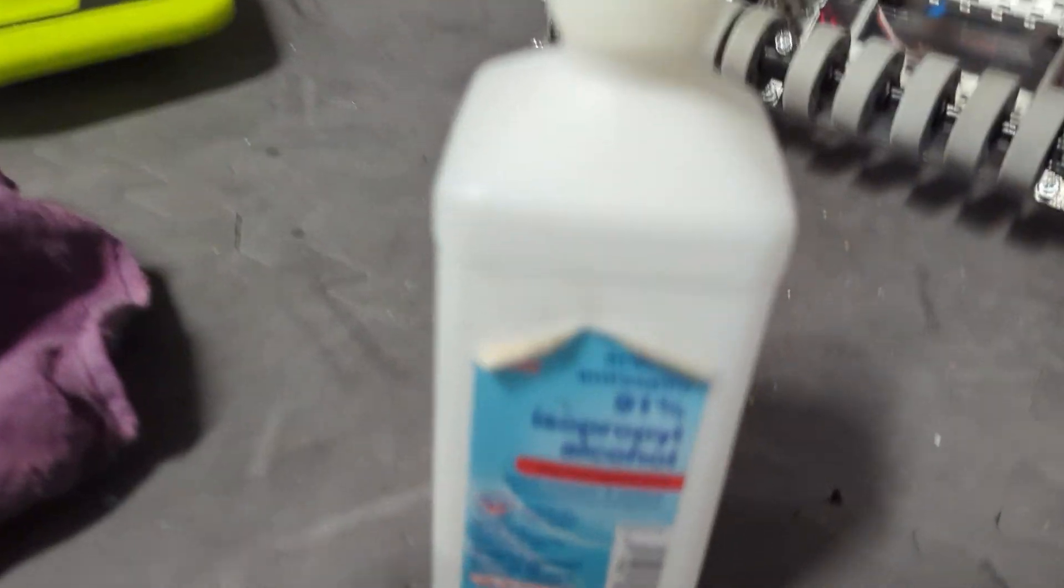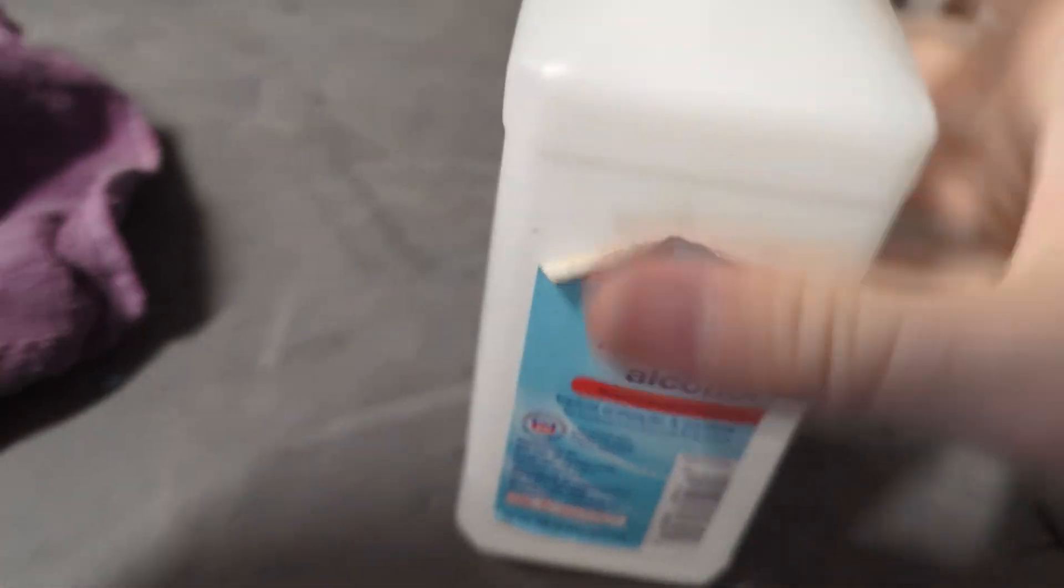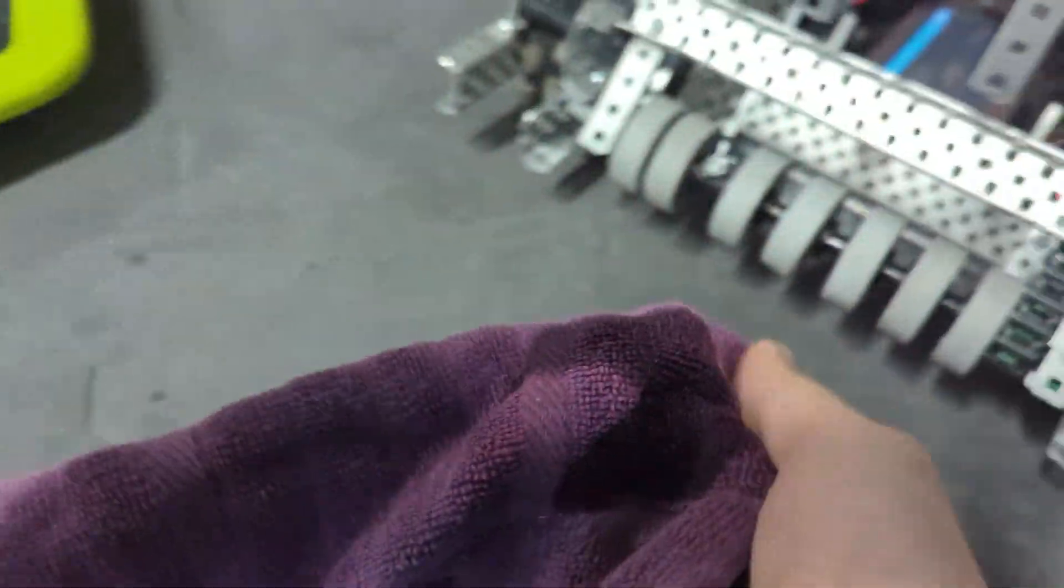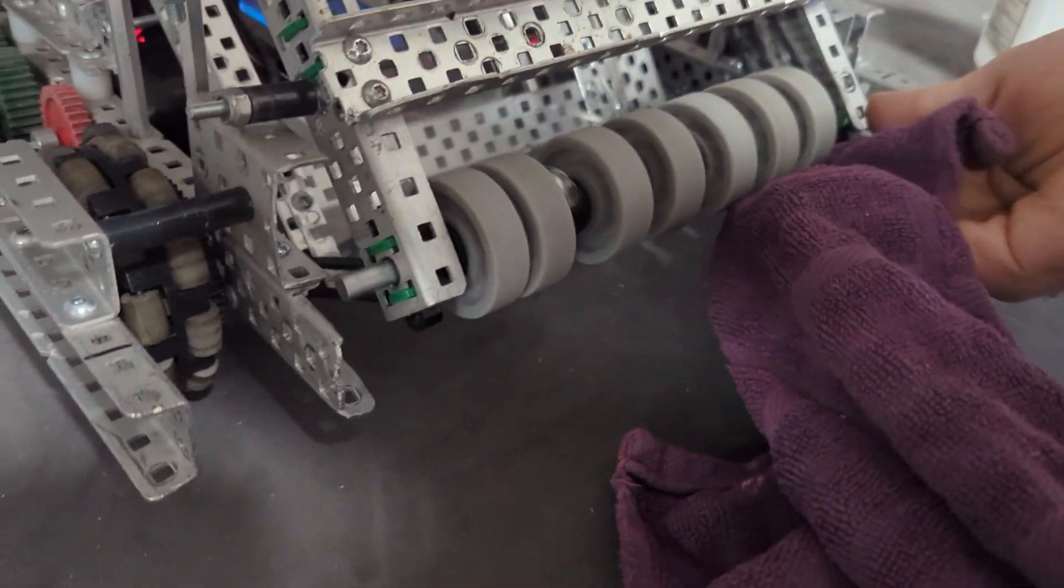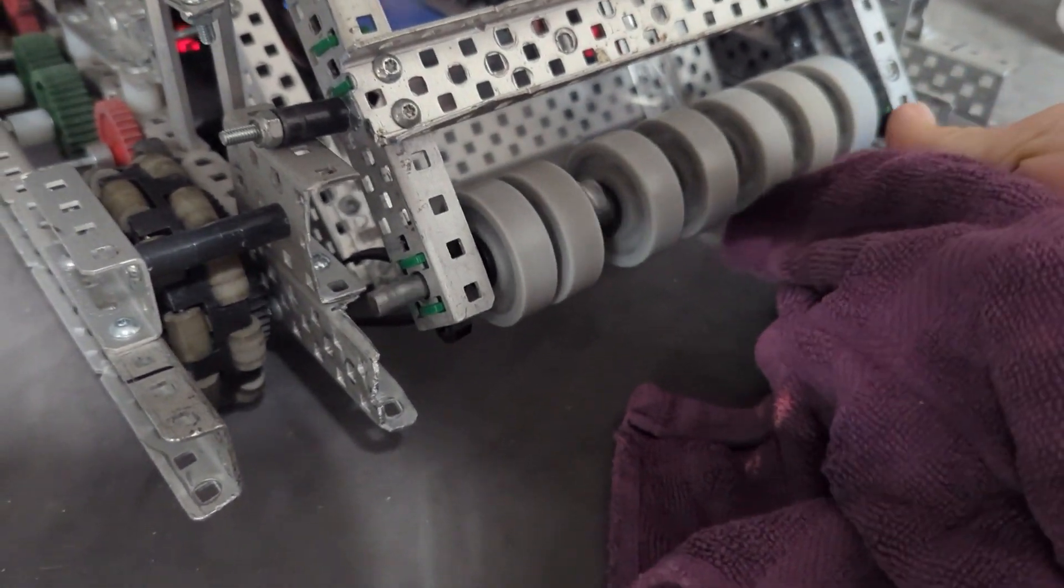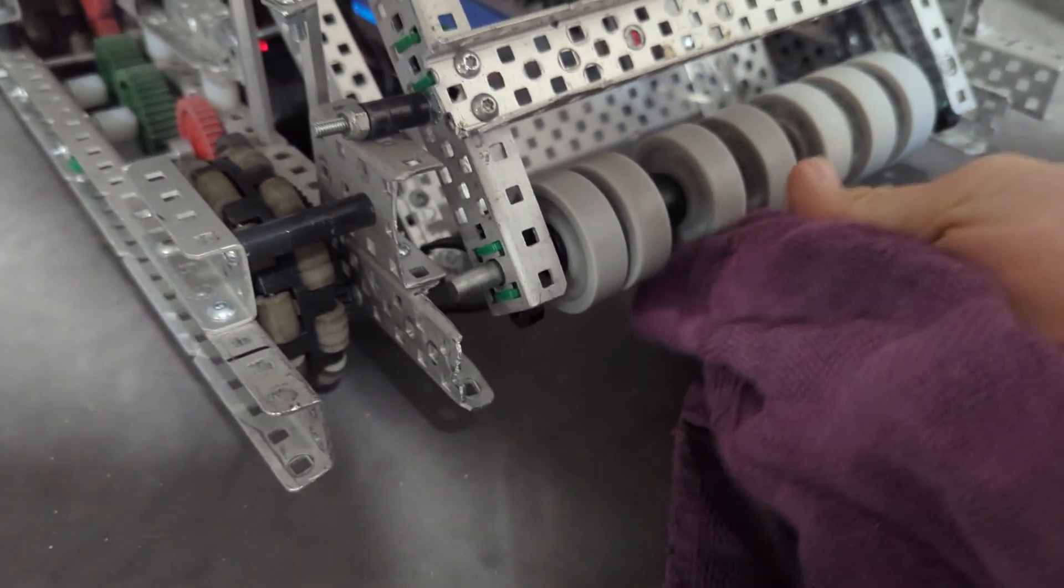All you're going to do is use some isopropyl alcohol and pour it on a towel or a rag or something. And then you're just going to spin your intake and rub your rubbing alcohol on your towel onto these flex wheels, and that'll clean them off super well. It'll make your ring grab so much better. So there you go. There's some tips and tricks that you need to know for building intake for VEX High Stakes.